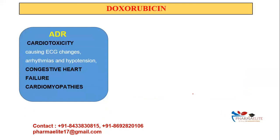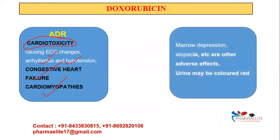The ADR — very, very important, more than the mechanism of action. The most commonly seen adverse effect is cardiotoxicity: ECG changes, arrhythmias, hypotension, congestive heart failure, and cardiomyopathies. This applies to both doxorubicin and daunorubicin. Other adverse effects include bone marrow depression (seen with most anti-cancer drugs), alopecia (loss of hair), and red-colored urine. Never forget the key ADR: cardiotoxicity.